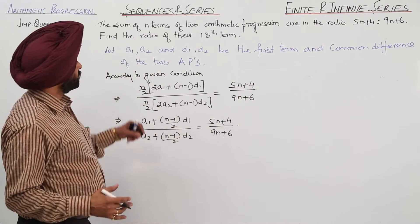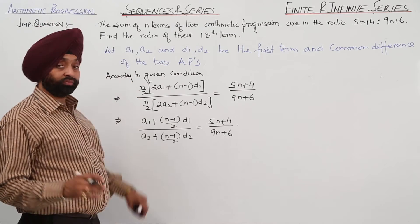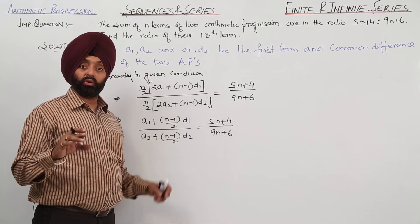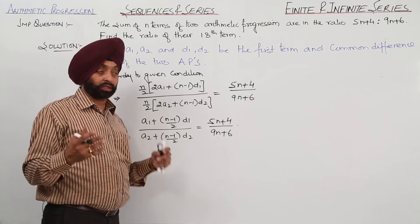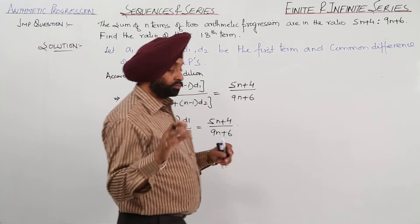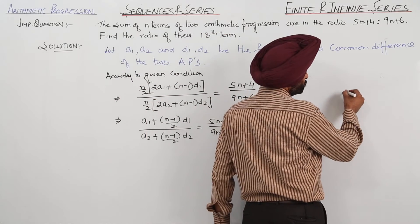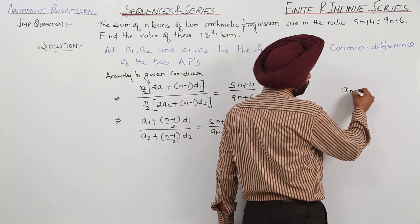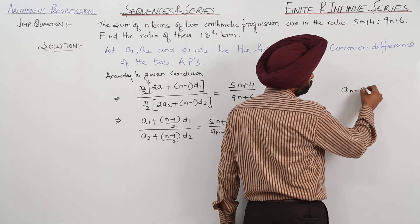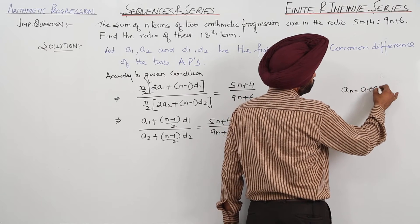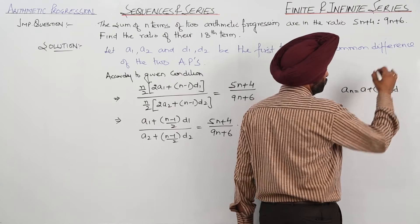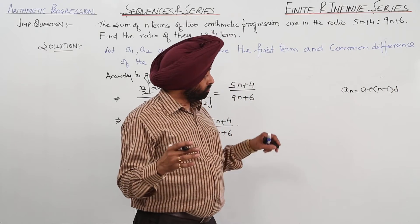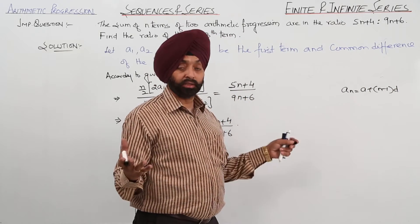They have asked us to find the ratio of the 18th term. The general term An is equal to a plus n minus 1 into d, and we have to find the 18th term. So we need n minus 1 upon 2 to equal 17.